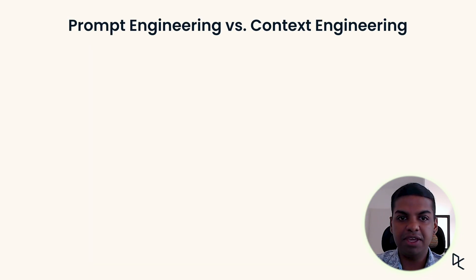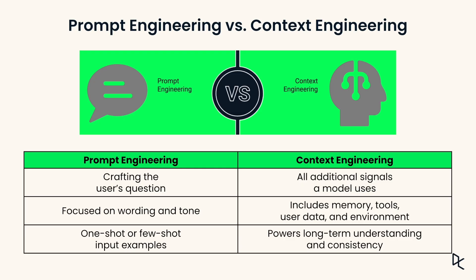Because many are usually confused about the difference between prompt engineering and context engineering, let's look at what prompt engineering is. Prompt engineering is about crafting the user's question — it focuses on wording, tone and short examples. Context engineering is much broader; it includes additional signals that the model uses, such as system prompts, memory, tools, user data and environment. It is what powers long-term understanding and consistency. Think of prompt engineering as writing a sentence; context engineering is designing the entire environment around that sentence.